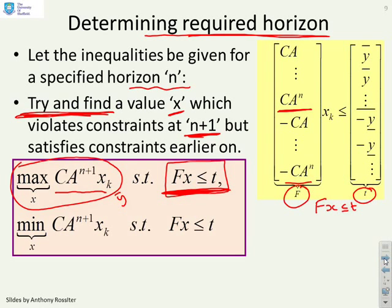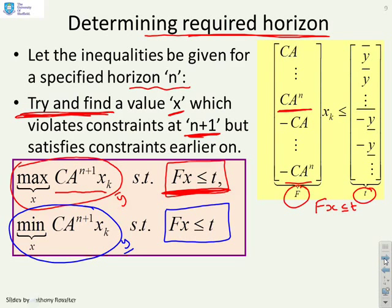In a similar way, for the lower limit, I could do a minimise over x of CA to the n plus 1 x, and now I'm comparing it to y under bar. And again, subject to constraints being satisfied before.